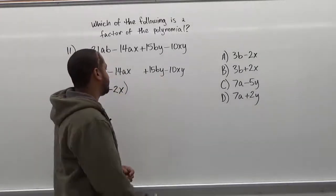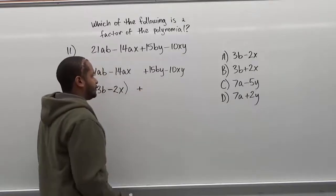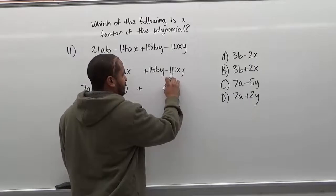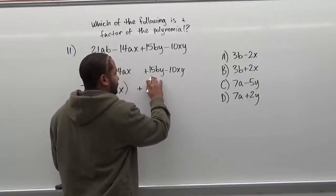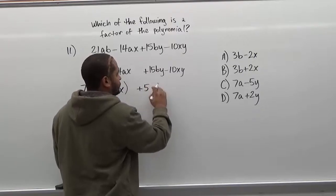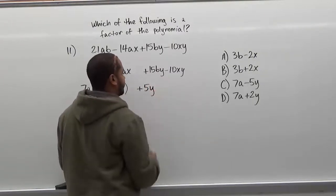Now for the second set of numbers, we automatically take the plus from the third sign, and we're going to look for the greatest common factor of 15by's and negative 10xy's. Here we see that 15 and 10 have a common factor of 5, and we also see in the variables that they both have a y variable, so we'll factor that out as well.